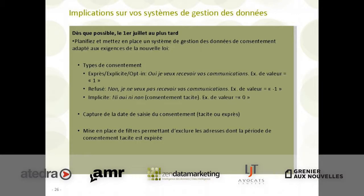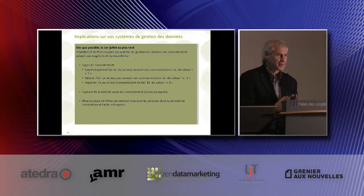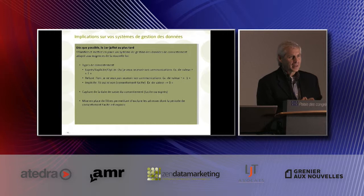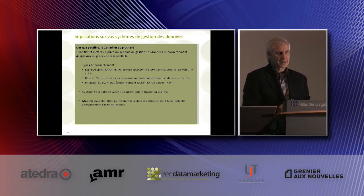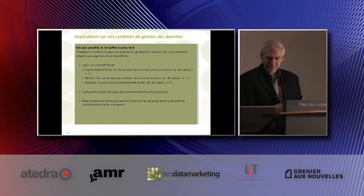Si le client refuse spécifiquement, on attribue une valeur de moins 1. Et si on a un consentement implicite — c'est-à-dire ni oui ni non, un consentement tacite — tout ce que vous avez dans vos bases de données actuellement, les gens à qui vous envoyez des communications, sont considérés comme tacites. Donc, c'est une valeur de zéro.